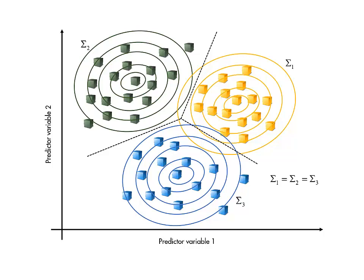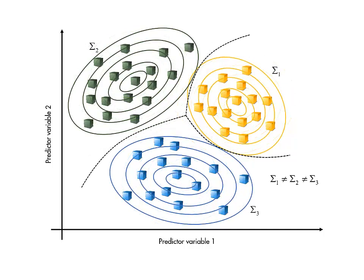However, linear boundaries are not appropriate for all problems. If we do not assume that the covariance matrices are the same for all classes, the boundaries turn out to be quadratic, and again the coefficients are determined by the mean vectors and covariance matrices of the observed classes.